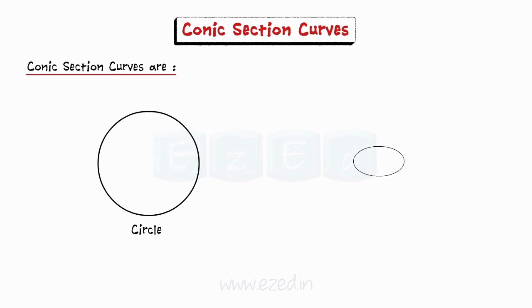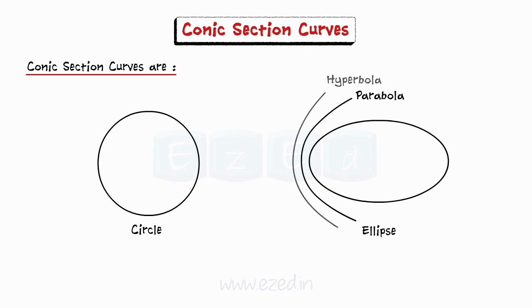Firstly, we will see conic section. Various types of conic sections are circle, ellipse, parabola and hyperbola.